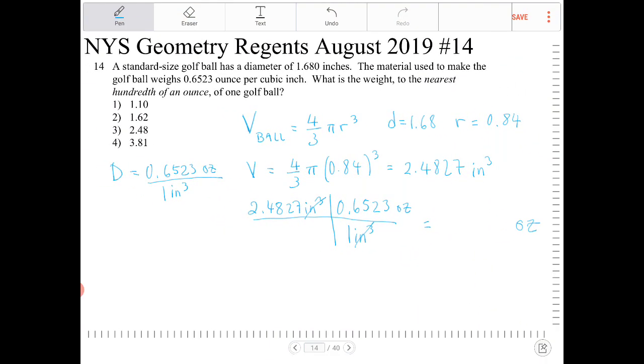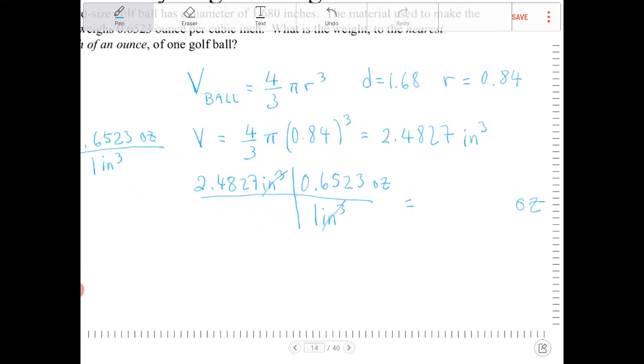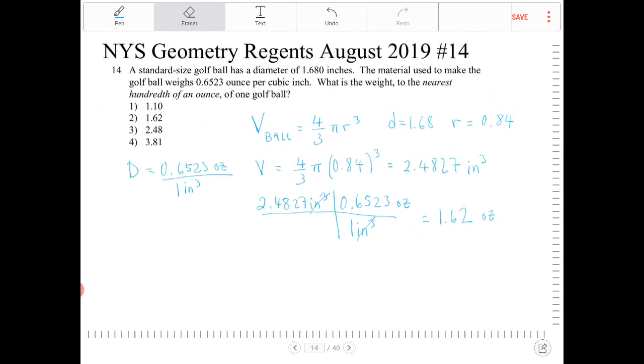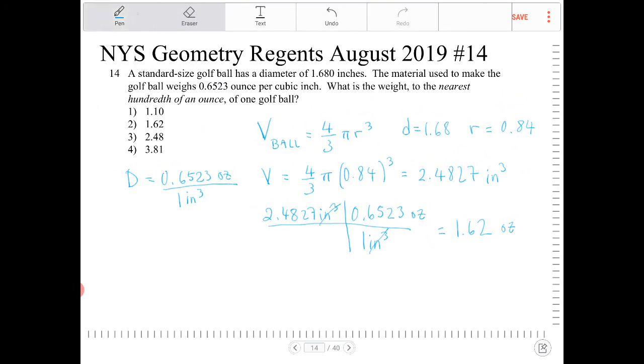And it says to round to the nearest hundredth of an ounce. So this is approximately 1.62 ounces then. So 1.62 ounce, that would be option two.